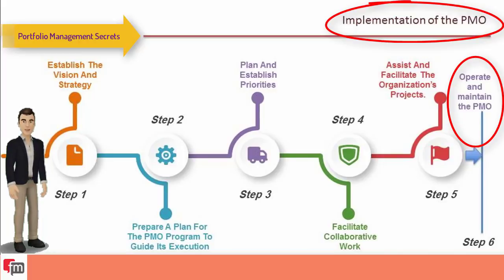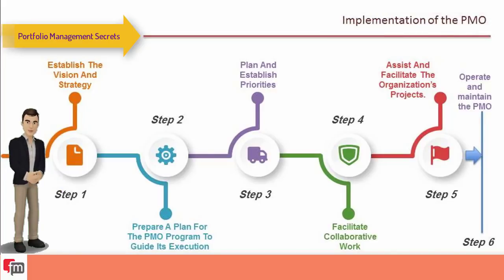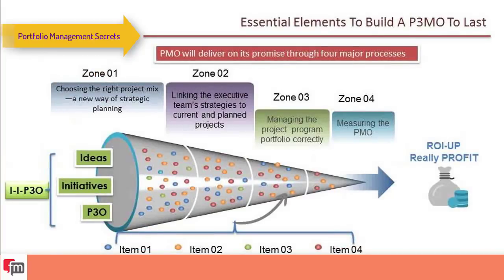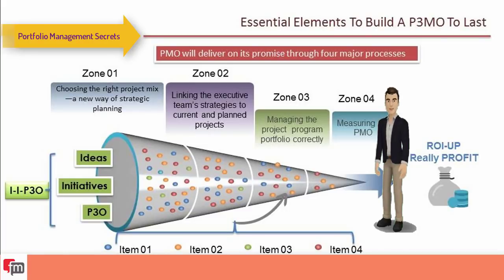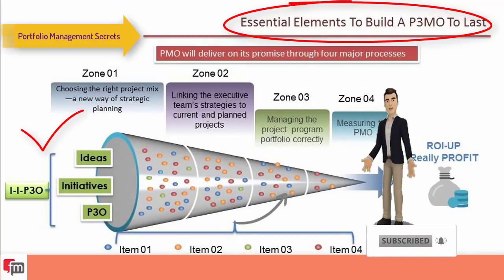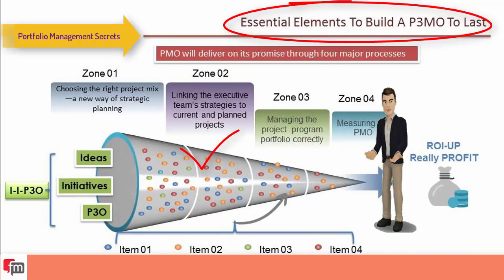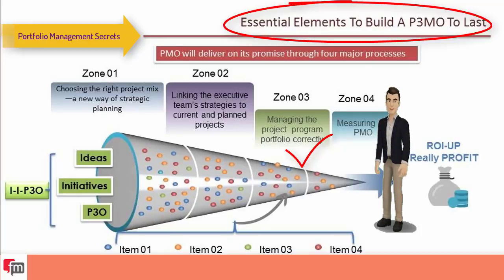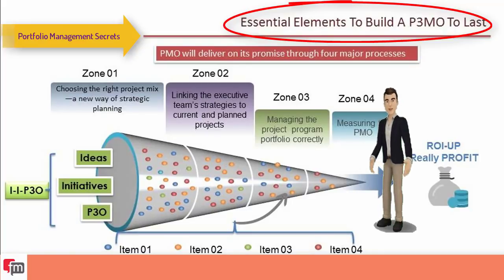The final step is to operate and maintain the PMO. Once operational, its activities must be tracked and monitored. The PMO will deliver on its promise through four major process zones: first, choosing the right project mix as a new way of strategy planning; second, linking executive team strategies to current and planned projects; third, managing the project portfolio correctly; and fourth, measuring the PMO through tangible, improved project performance relative to executive strategic goals.